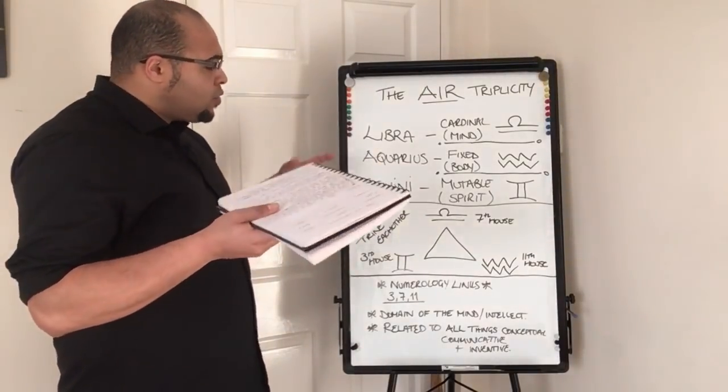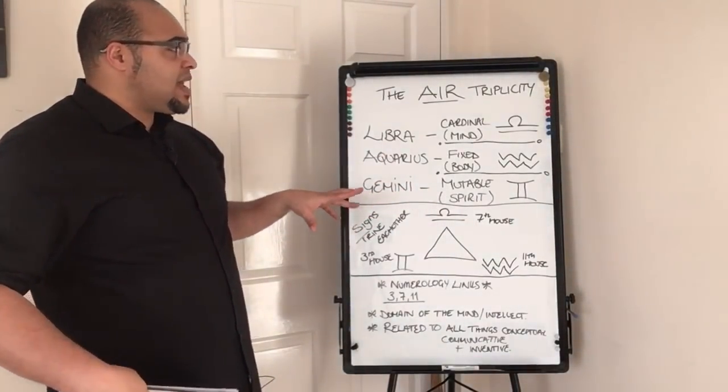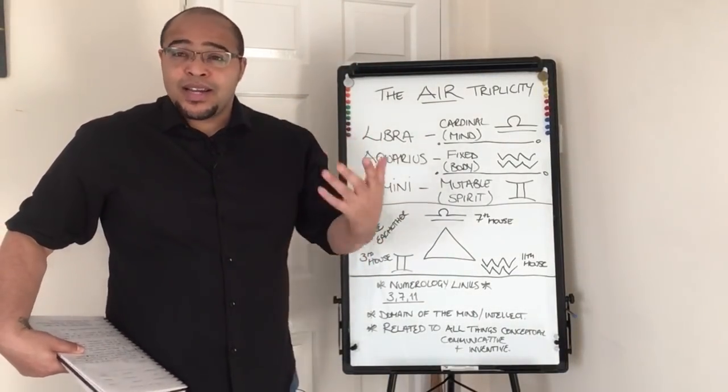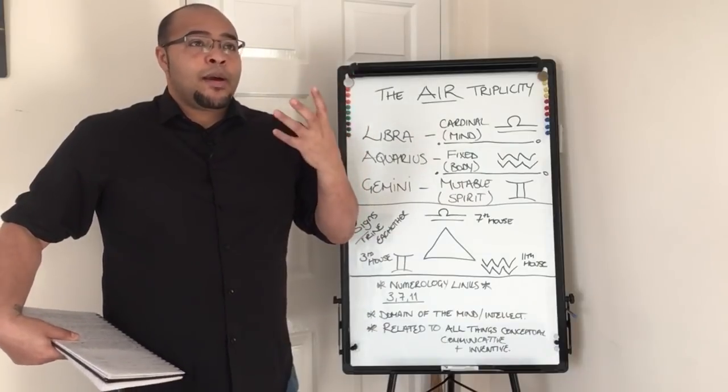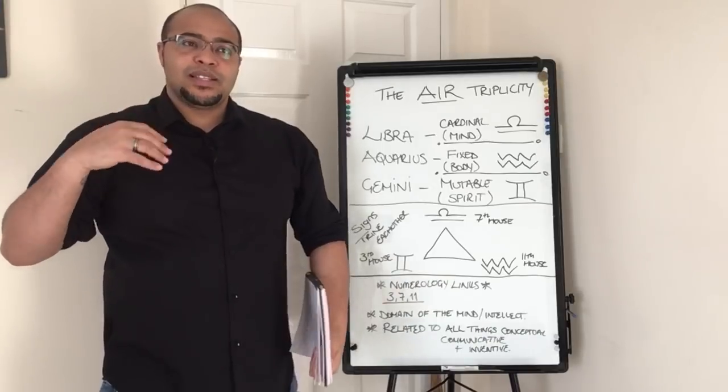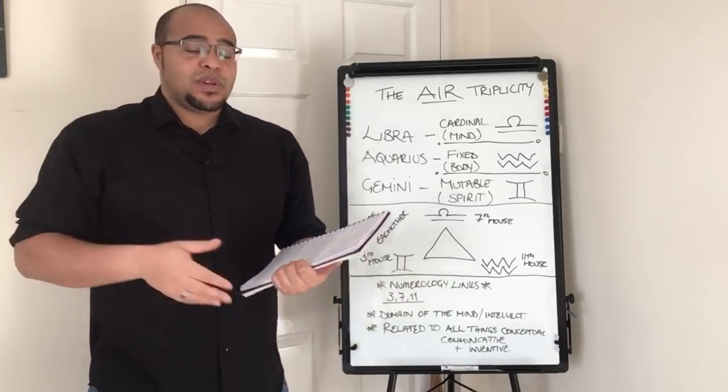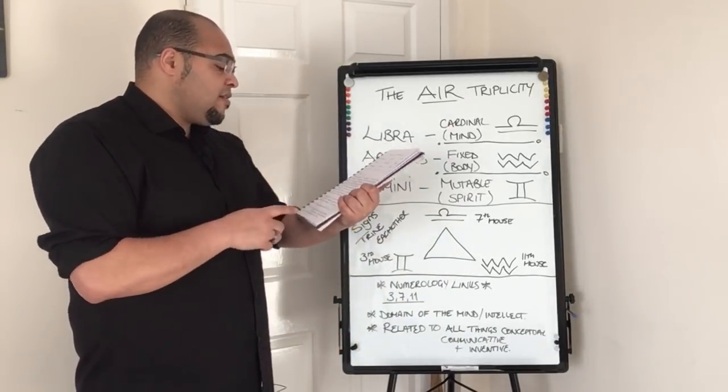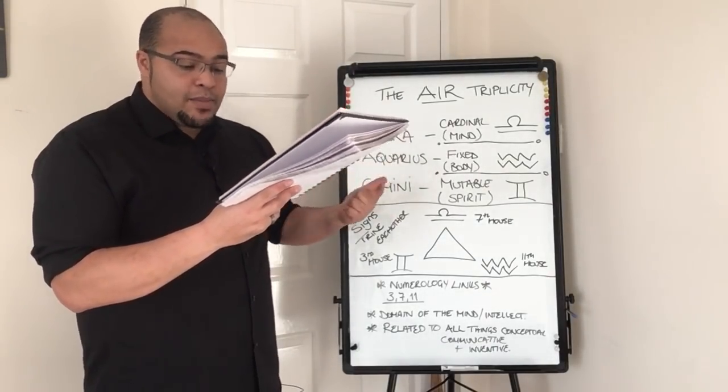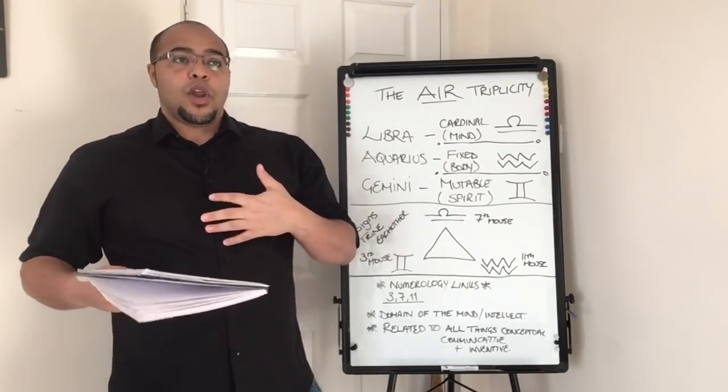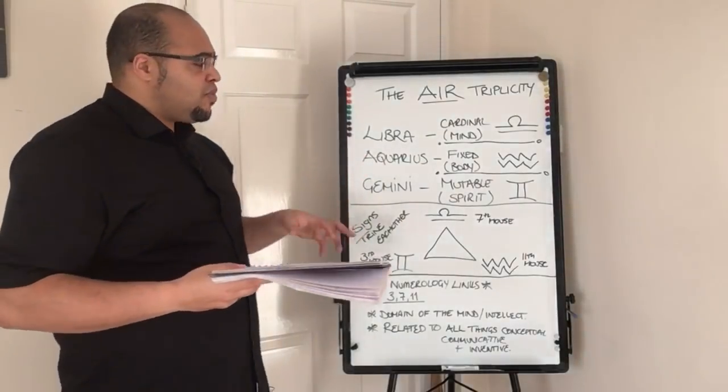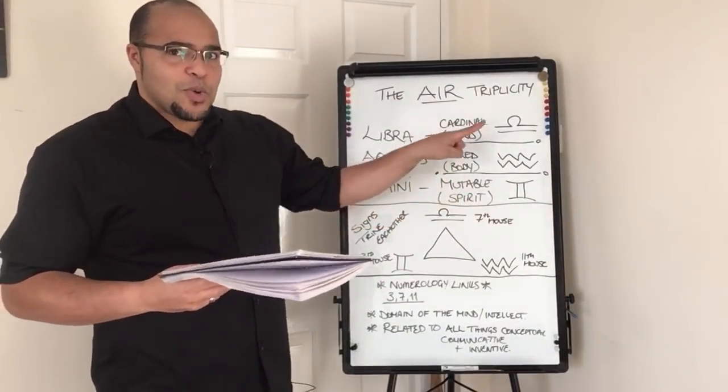I talked about how the signs might express this energy. They're all air signs. They're all inventive, communicative, idealistic. They're all social. They're all fun, but they all do and gain all of these things in different ways. They express them in different ways. What I've got here is Libra will do this through schooling, through academia, through books, through tuition, through working with somebody in mutuality, which I think is brilliant. Not mutability, mutuality.